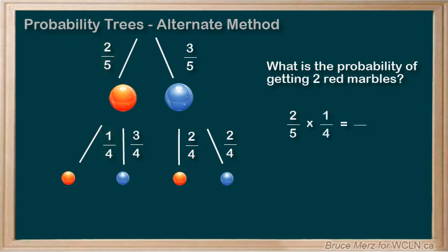And the probability of that happening is going to be two out of five times one out of four. To figure that out, when multiplying fractions, we multiply the numerators, or two times one in this case, which is two, and we multiply the denominators, or five times four, which is twenty.